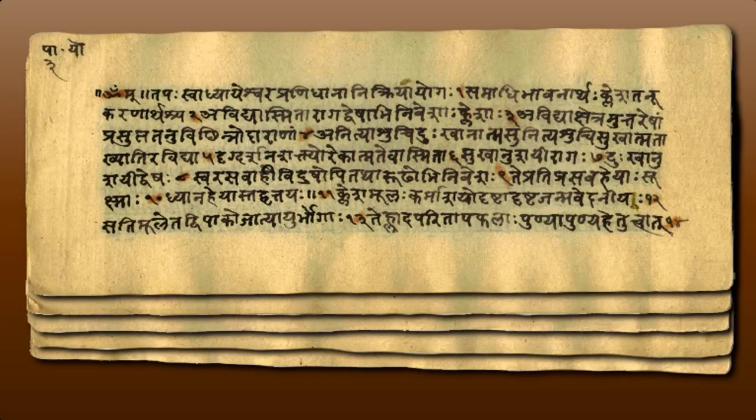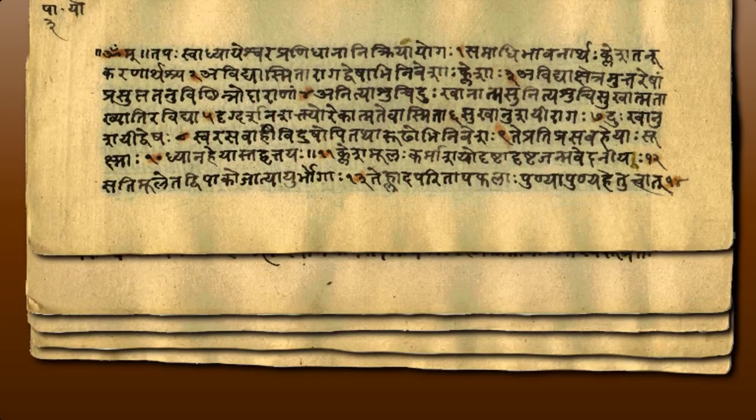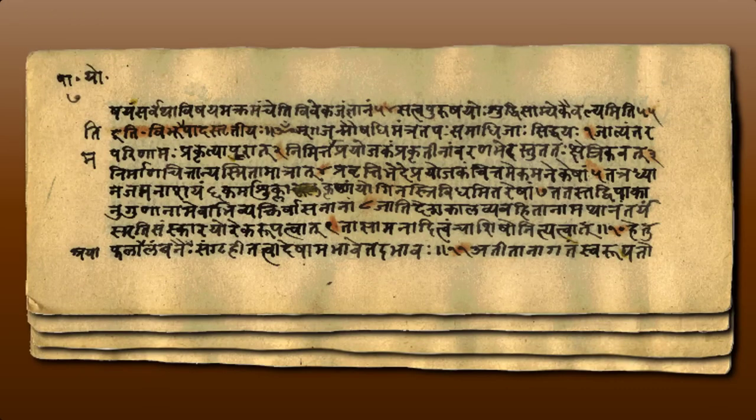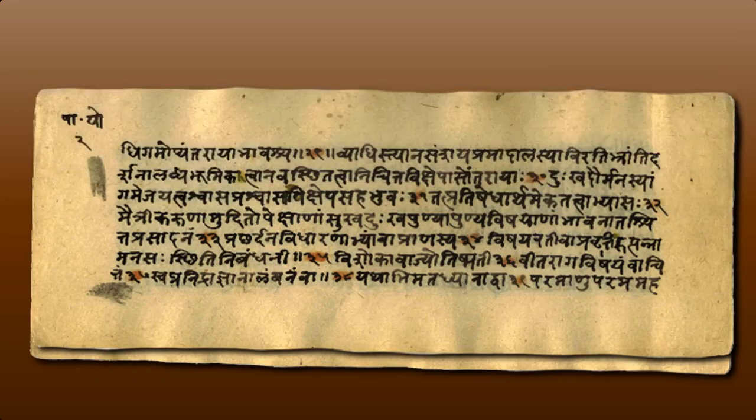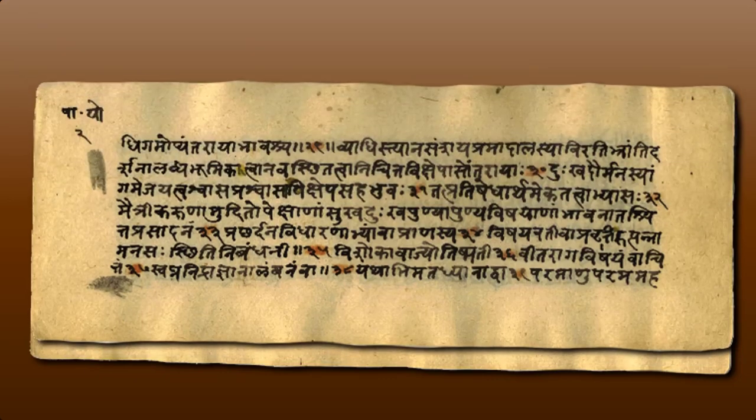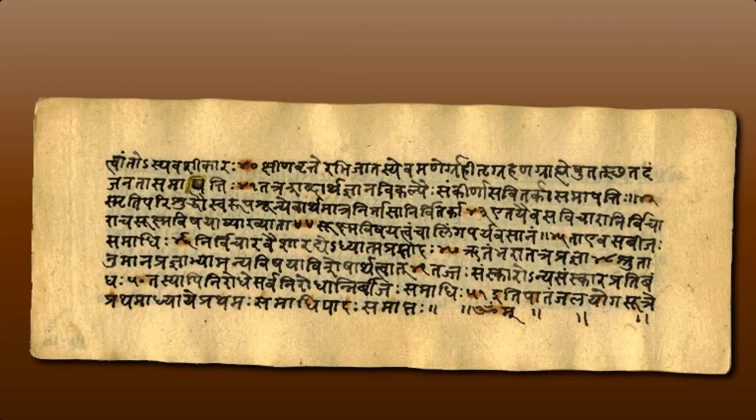His text contains 196 sutras, which are brief and often cryptic Sanskrit aphorisms, that are explained in great detail by traditional commentaries. It's often pointed out that the word yoga is related to the English word yoke, with the meaning of union.